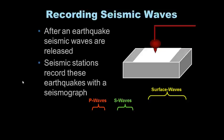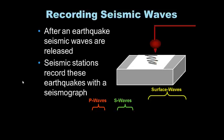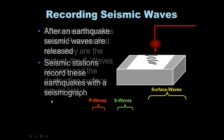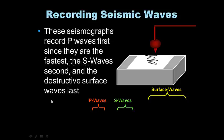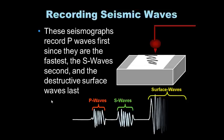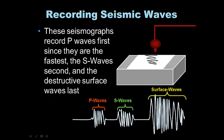After an earthquake, seismic waves are released and a seismograph records them. Seismic stations record earthquakes with a seismograph. These seismographs record P waves first, S waves second, and then the surface waves last. The surface waves are usually the biggest because they shake the ground the most.